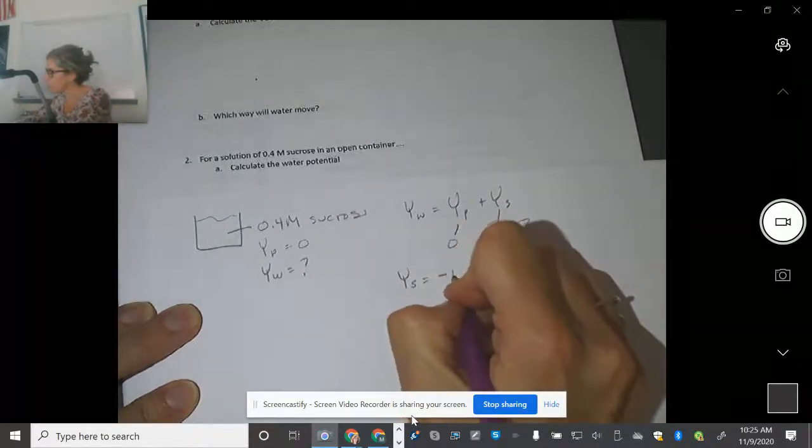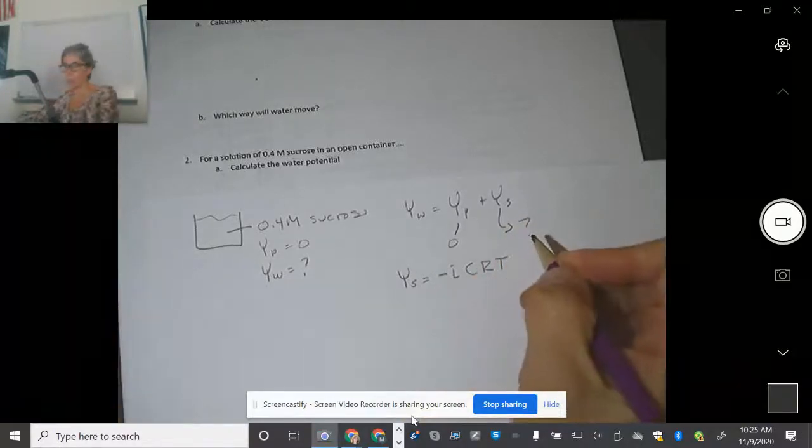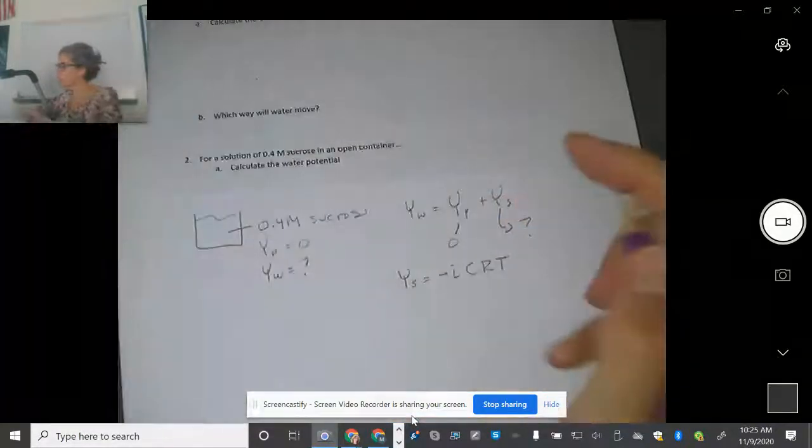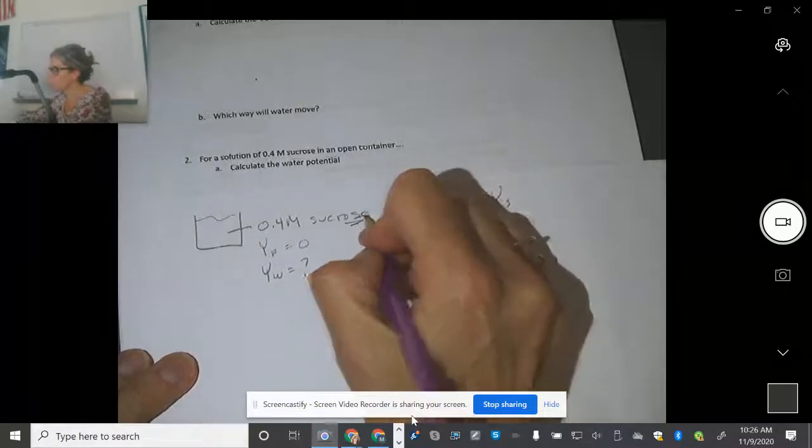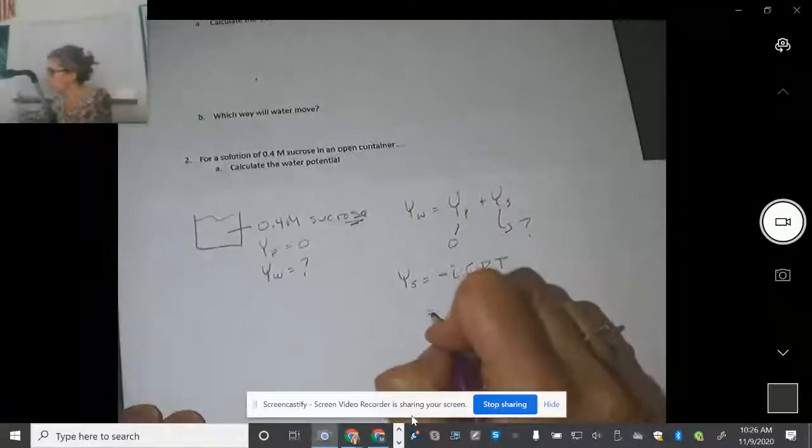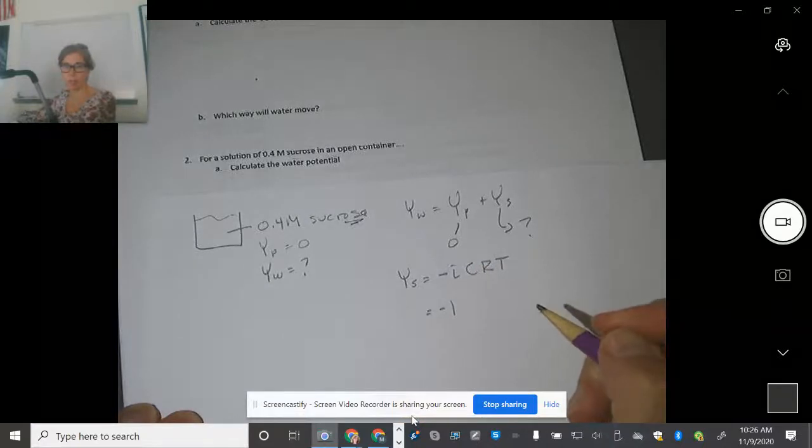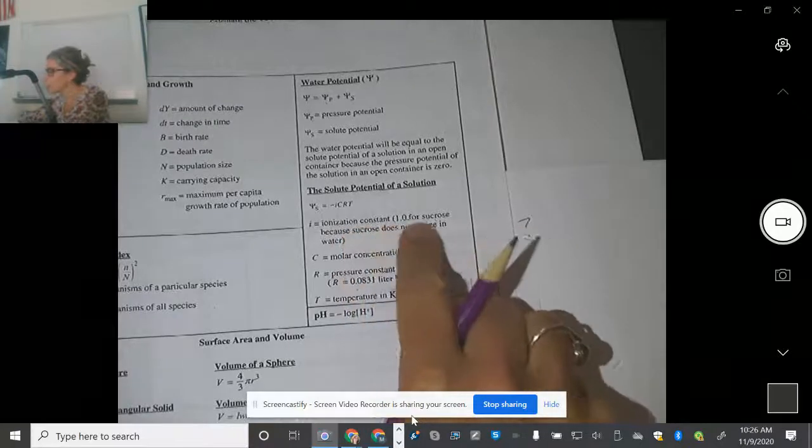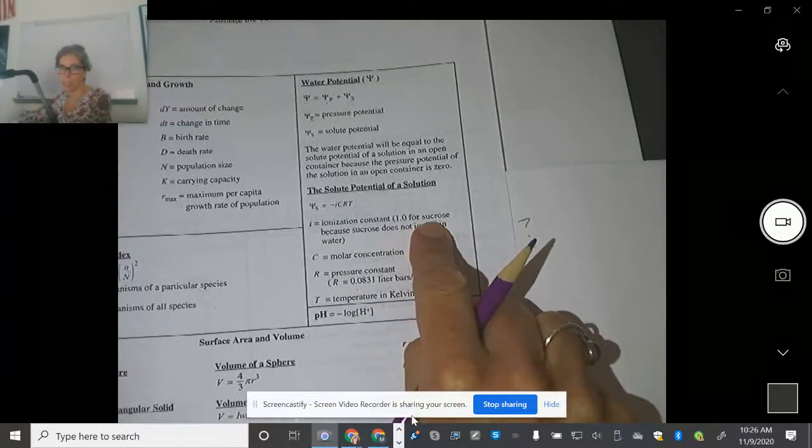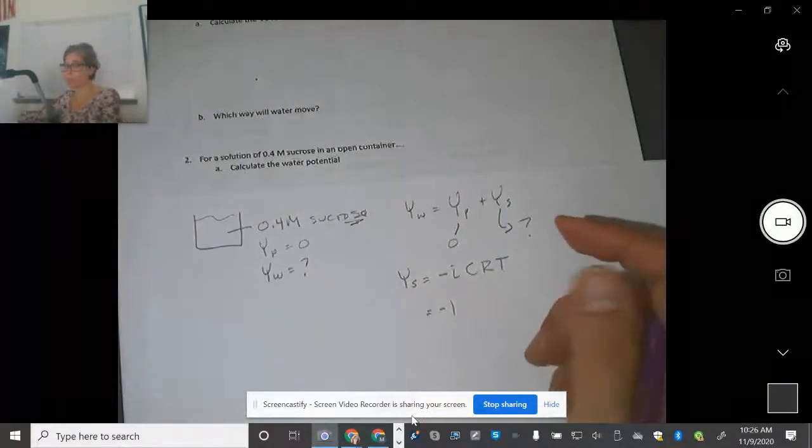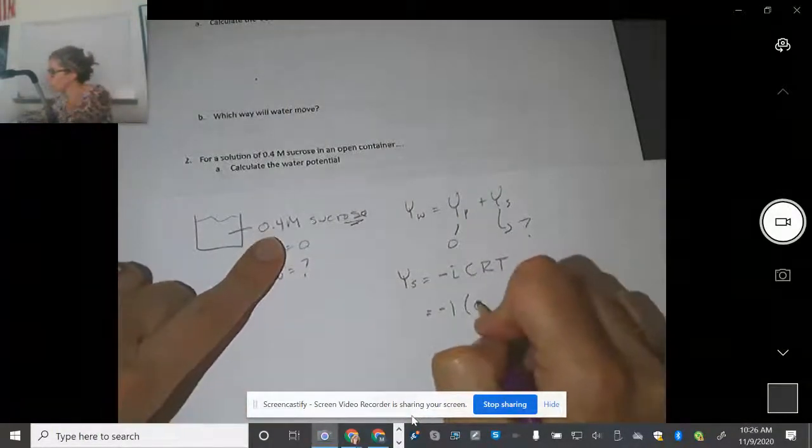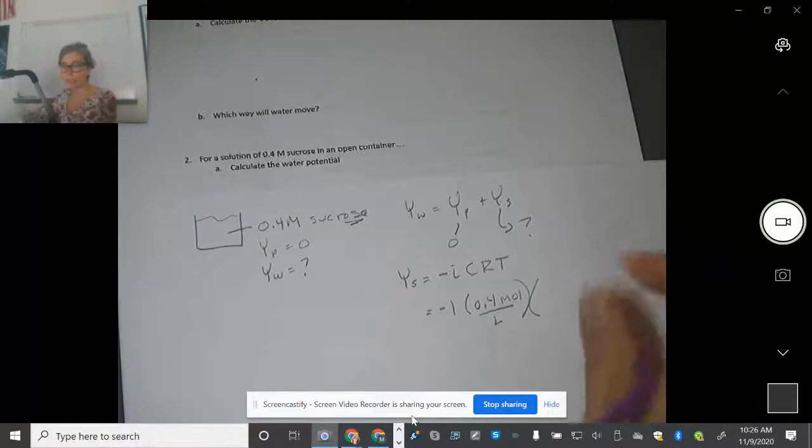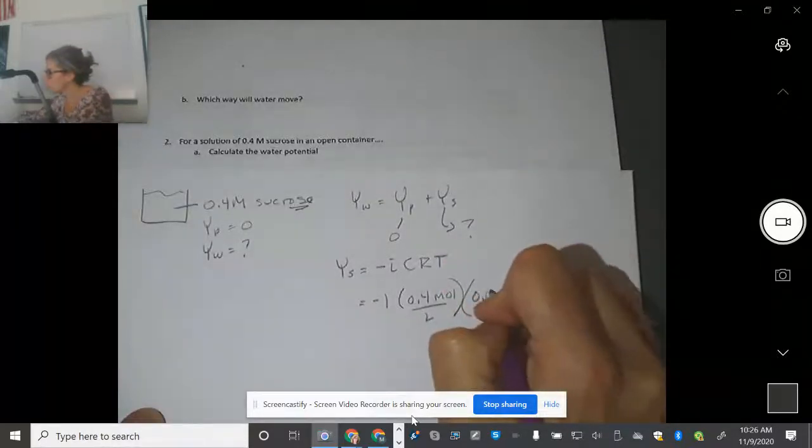So that is equal to negative i, C, R, T. And that is right from your formula sheet, right here. And the i's and the C and the R, T are all written right here. Anytime you have sucrose that's covalently bonded, it's got an ionization constant of 1 because it doesn't separate out into different ions. It tells you right here the ionization constant for sucrose is 1. That's true of anything that ends in ose or anything that's covalently bonded. So the C is 0.4. And the molar means moles per liter. I do like to write it out like that so I can cross out my units so I know I've done it right.